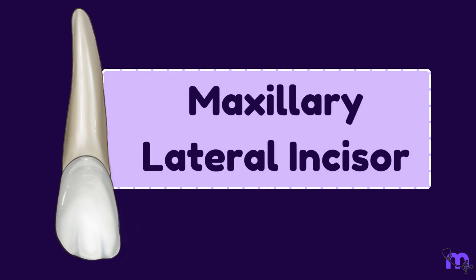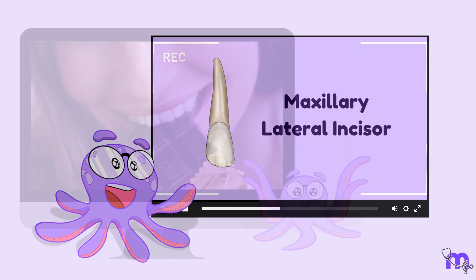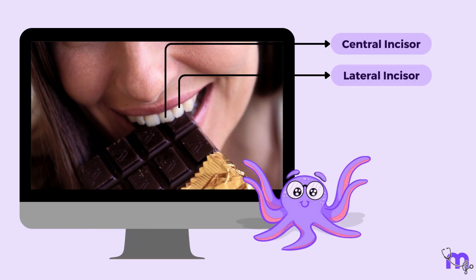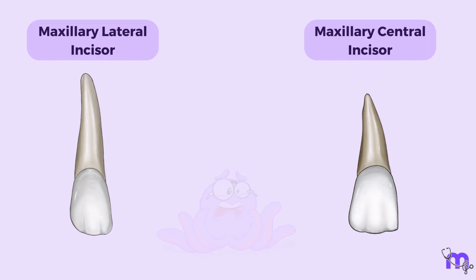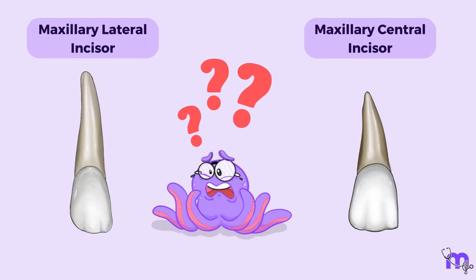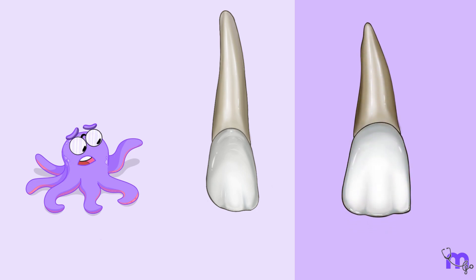Welcome to our video on the anatomy of the maxillary lateral incisor, a tooth that complements the maxillary central incisor in both form and function. These two teeth bear such a striking resemblance that they are often mistaken for one another. The maxillary lateral incisor exhibits distinct characteristics when compared to the central incisor, despite their similar appearance.